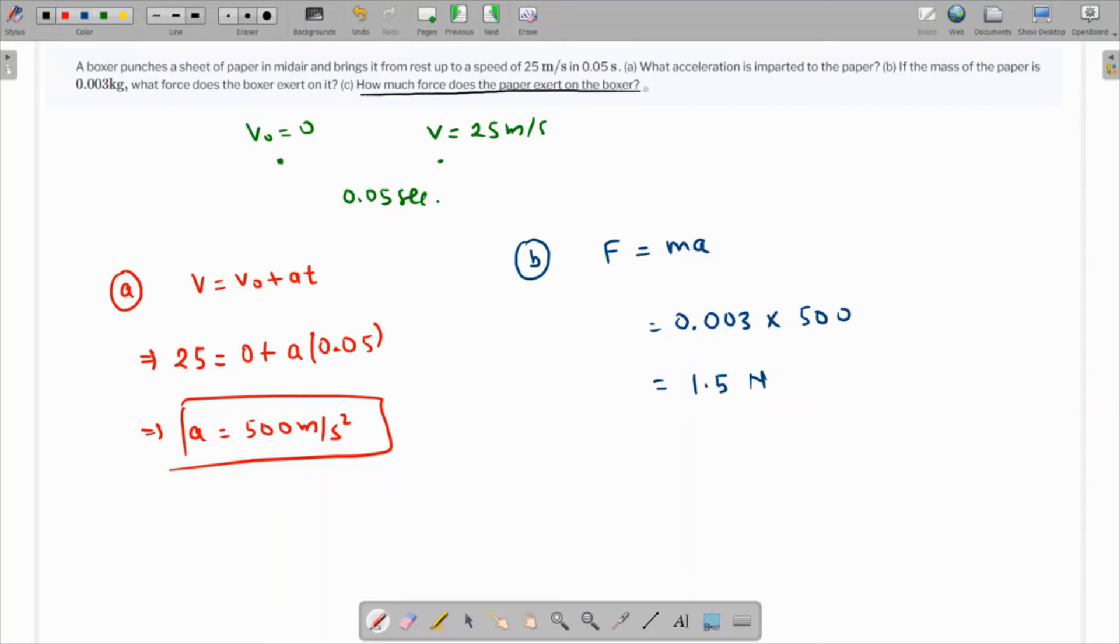And part C talks about how much force does the paper exert on the boxer. So that's going to be the same value as the force, equal to 1.5 Newtons. And what is the reason? The reason is Newton's third law, which states that every action has an equal and opposite reaction.